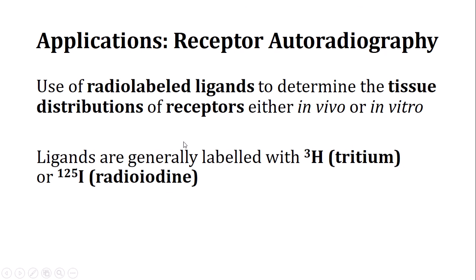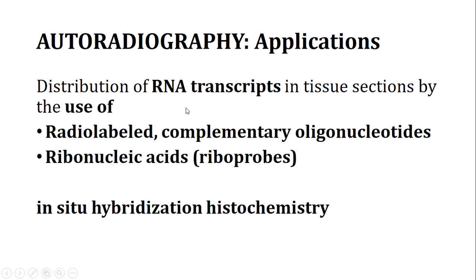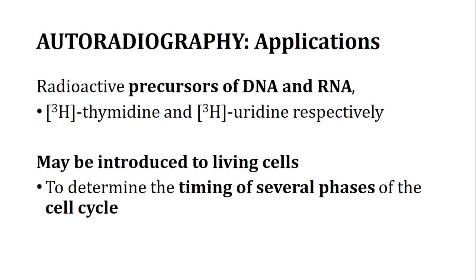Receptor autoradiography can be performed in vivo or in vitro using tritium (H3) or I125 radioiodine. We can also study RNA transcripts using radioactive radiolabelled complementary ribroprobes — this is called in-situ hybridization histochemistry. Alternatively, H3 thymidine or H3 uridine can be incorporated into DNA or RNA respectively.